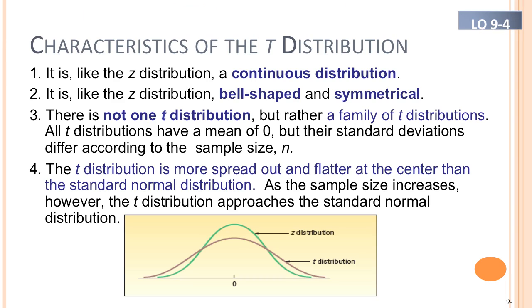The characteristics of the t-distribution: it's like the z — they're both continuous distributions. It's bell-shaped and symmetrical. However, there isn't just one t-distribution; it's a family of distributions. They all have a mean of zero, but their standard deviations differ according to the sample size. As you can see from the picture, the t-distribution is more spread out and flatter at the center than the standard normal z-distribution. But as sample size increases, it becomes the same as the z.